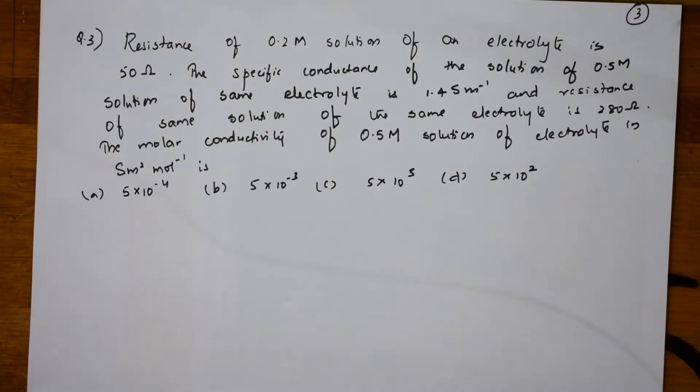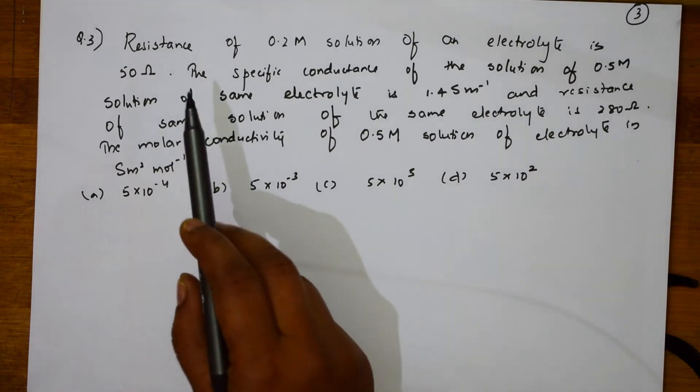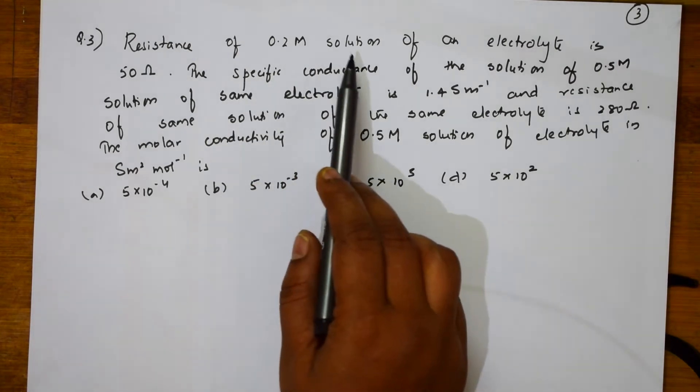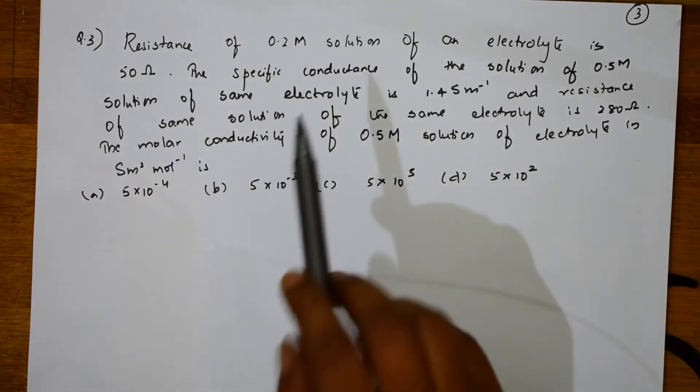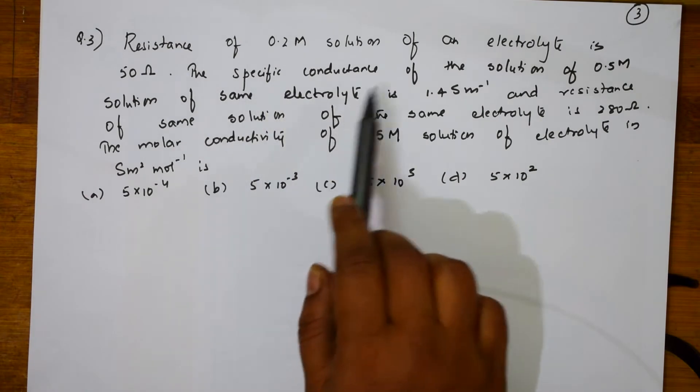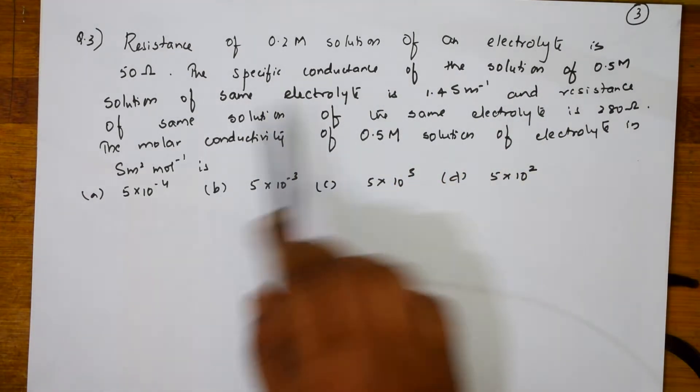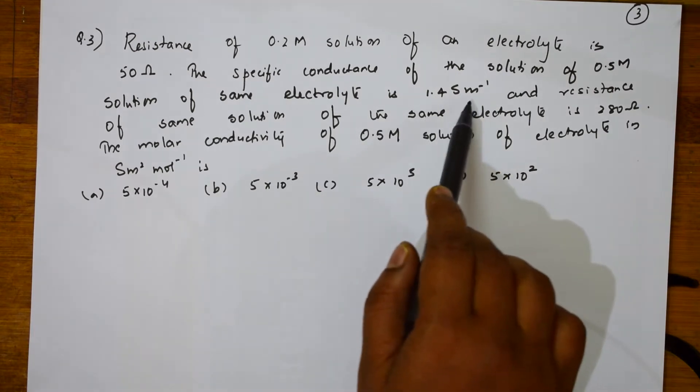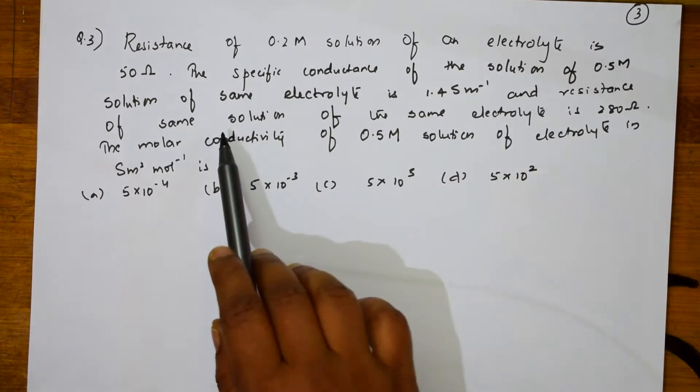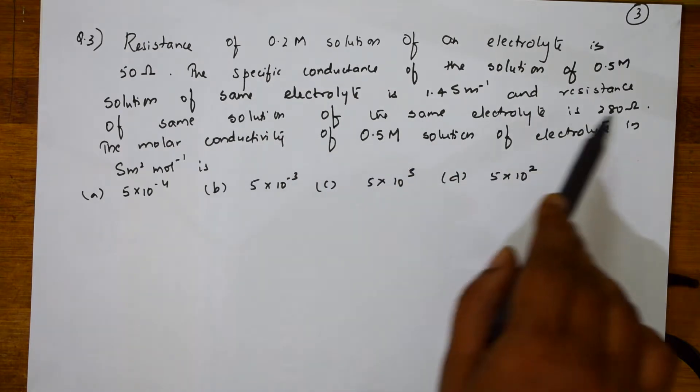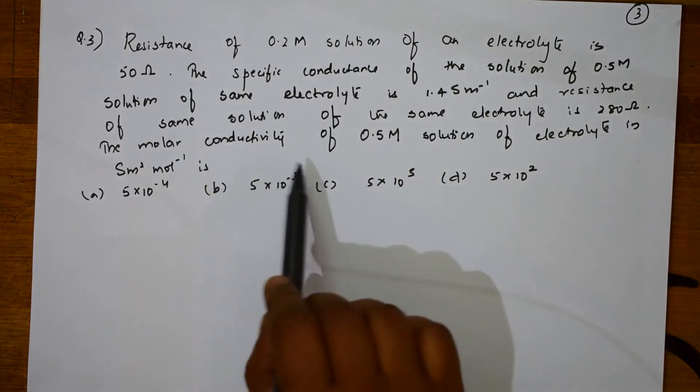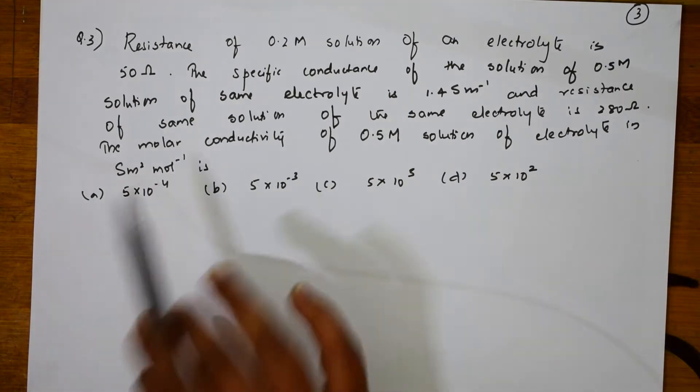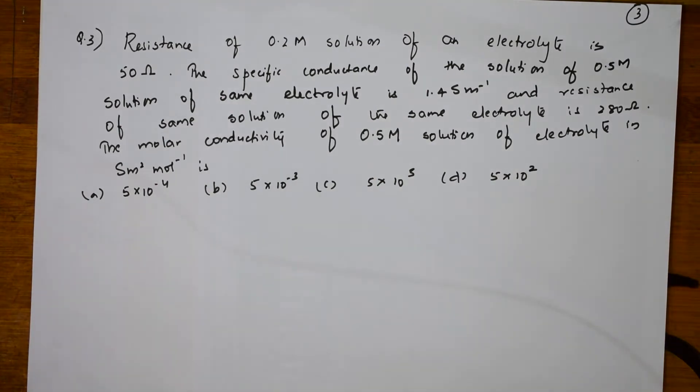Let us come back and see one more numerical. Here, we are supposed to find the molar conductivity. I have already written the formula. Let us read the question first. Resistance of 0.2 molar solution of an electrolyte is 50 ohms. The specific conductance of the solution of 0.5 molar solution of the same electrolyte is 1.4 meter inverse and the resistance of the same solution of the same electrolyte is 280 ohms. The molar conductivity of 0.5 mole solution of electrolyte is this. I need to find the molar conductivity of that.